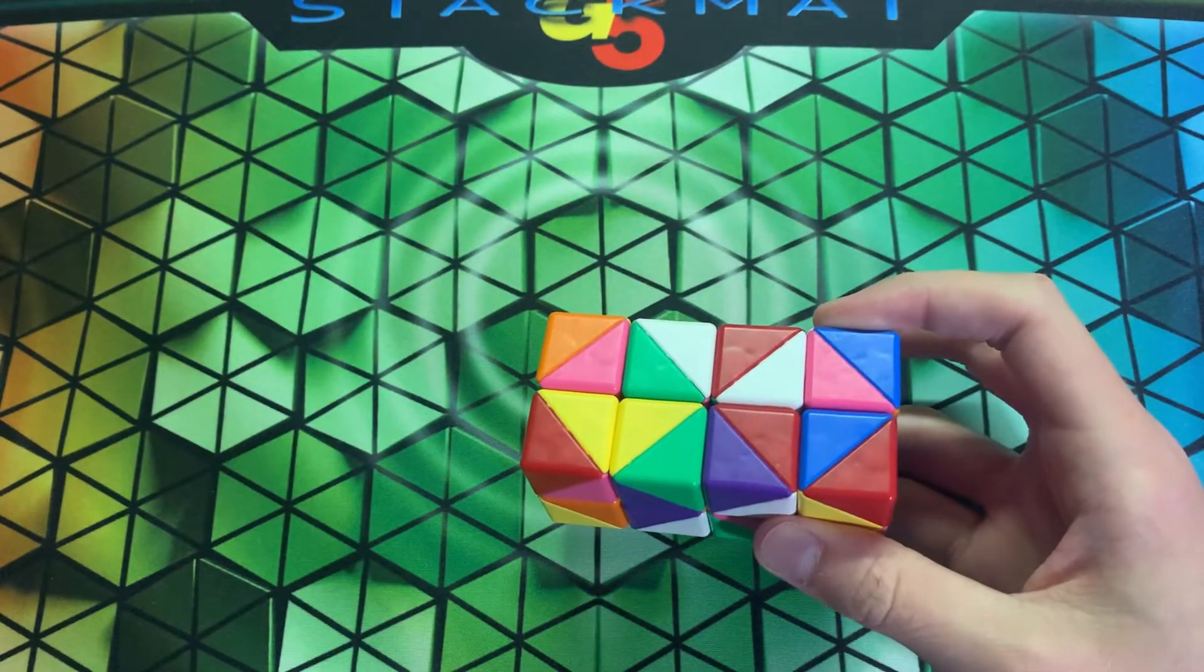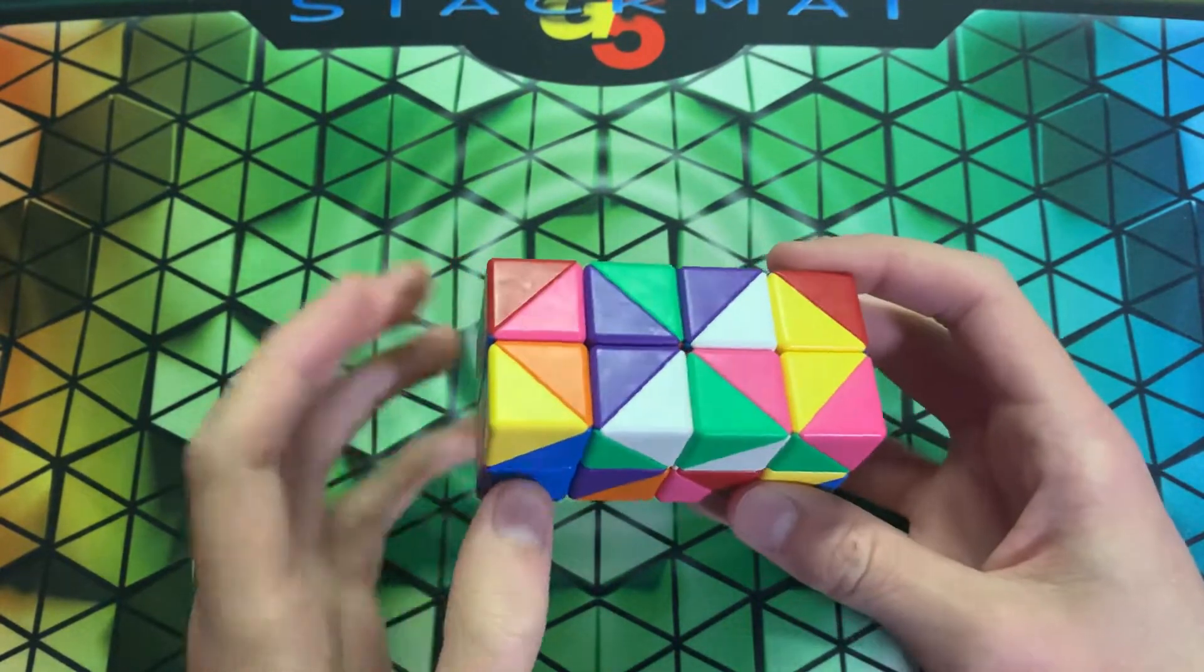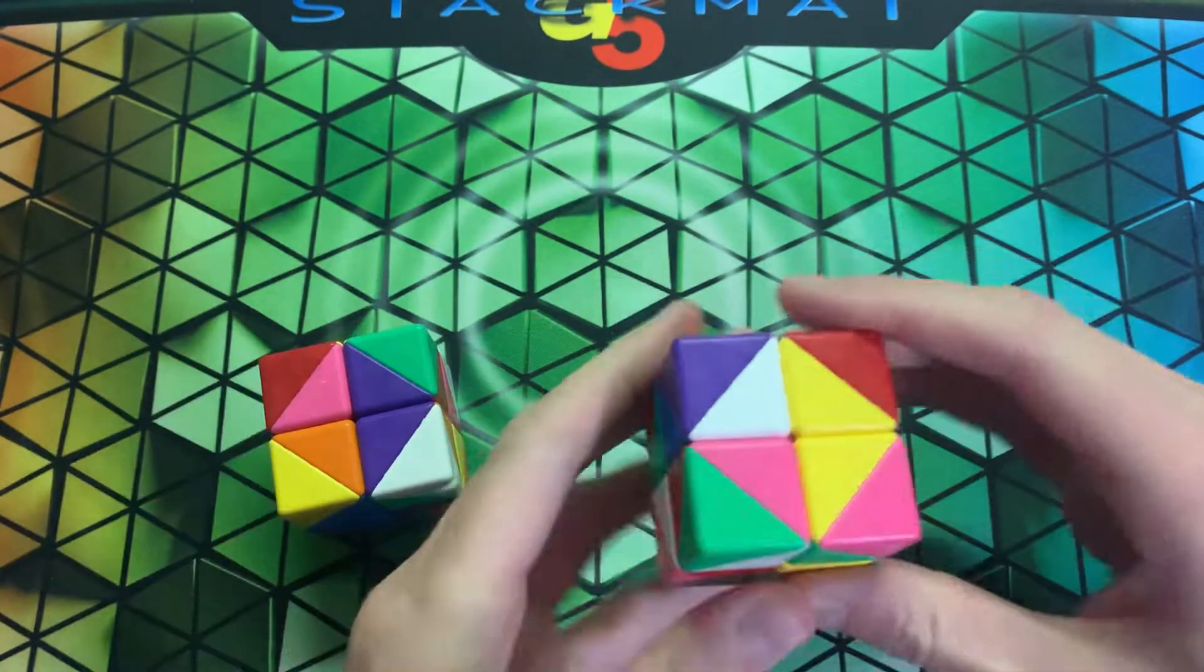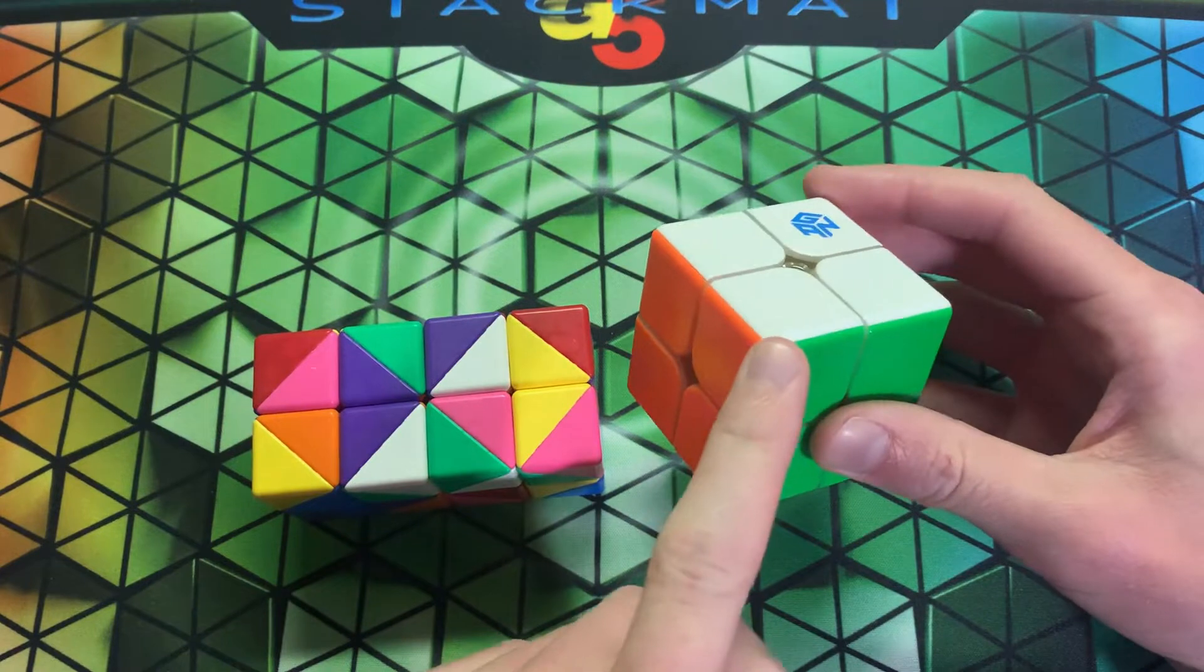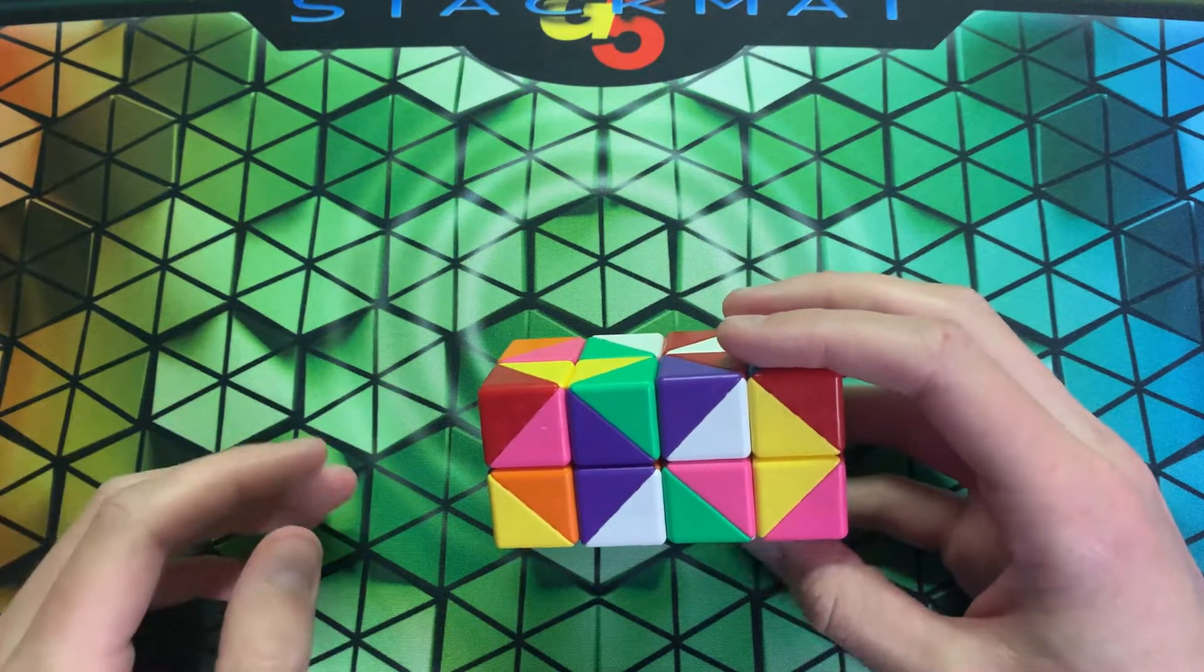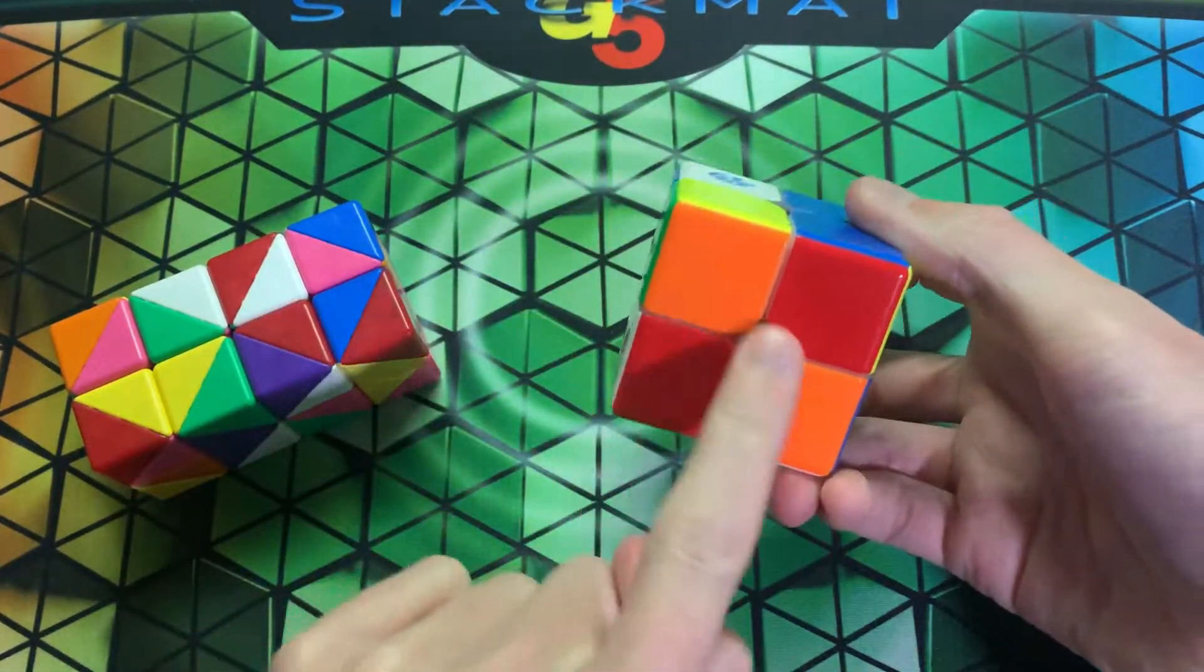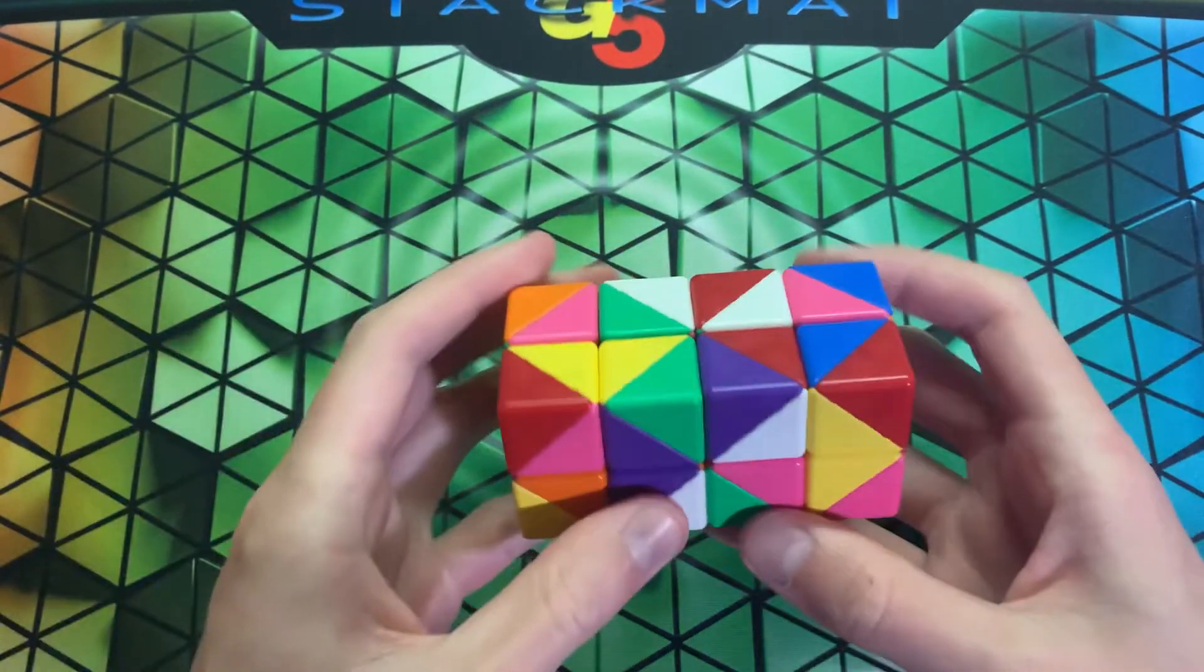Step zero is the inspection step. We're going to count how many corners are oriented into these spots. The left side stickers and the right side stickers are facing outwards. You want to count opposite colors as the same, so red-orange are the same, pink-purple is the same, white-yellow is the same, green-blue is the same. Because we're treating opposite colors as the same color.